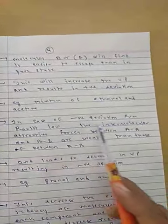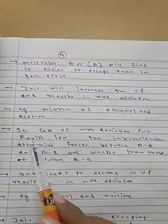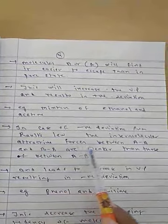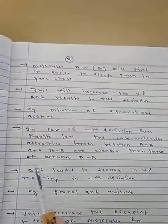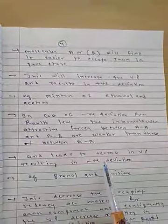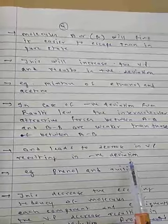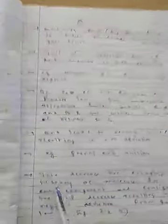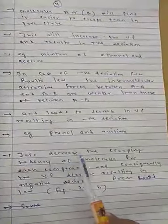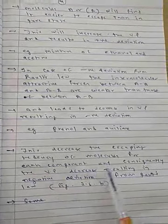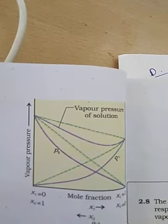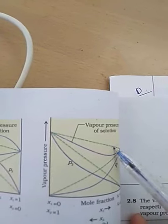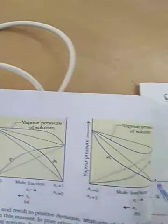In the case of negative deviation from Raoult's law, the intermolecular attractive forces between A-B are stronger than those between A-A and B-B. This leads to a decrease in vapor pressure, resulting in negative deviation. An example is phenol and aniline. This decreases the escaping tendency of molecules for each component, and consequently the vapor pressure decreases, resulting in negative deviation from Raoult's law, as shown in Figure 2.6. You can see one curve going down (negative) and one going upward (positive).